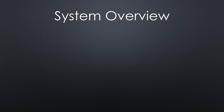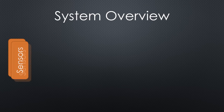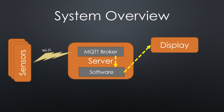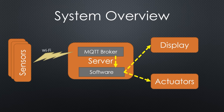Let's start with the overview of many of our systems at home. We have sensors that connect, often via Wi-Fi, to a server. Then the messages go to either Node-RED, Home Assistant, or another software to display results and act upon the sensor's values. Messages are sent to actuators, and they create physical actions like switching a light off or on.